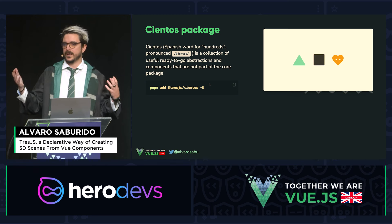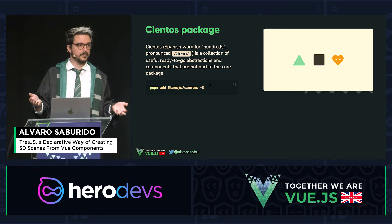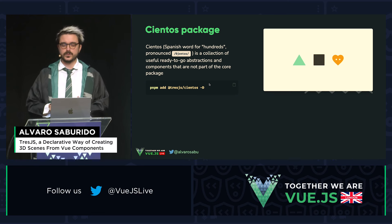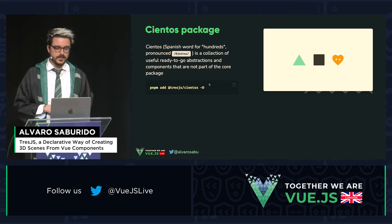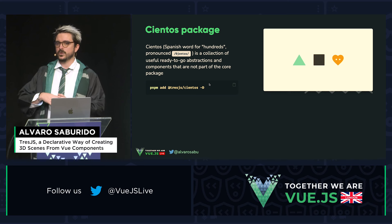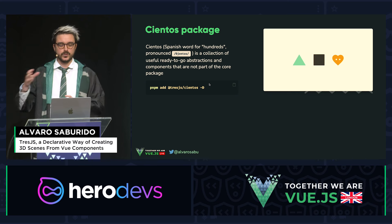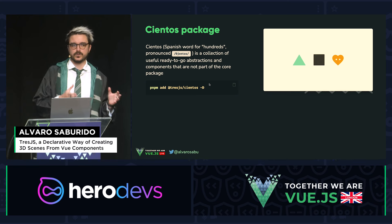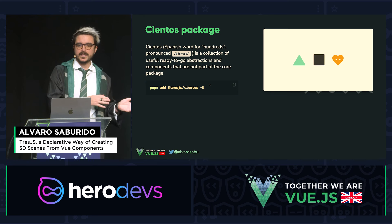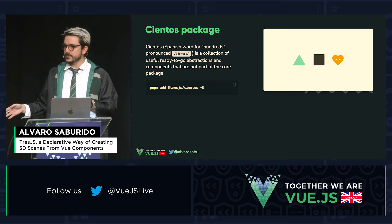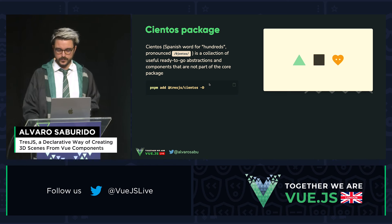My idea for TresJS was an ecosystem of packages. We have another package I forgot to use in the demo — the Cientos package. 'Cientos' is the Spanish word for hundreds. It contains all the abstractions: shaders, different geometries made easier to use. Why not in the core package? Because of size — the core package is bare and does everything, but if you want a better developer experience, you can use Cientos.